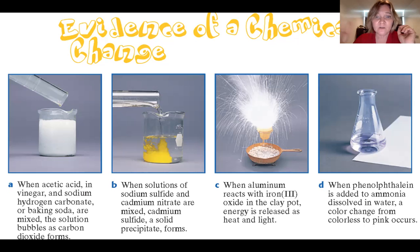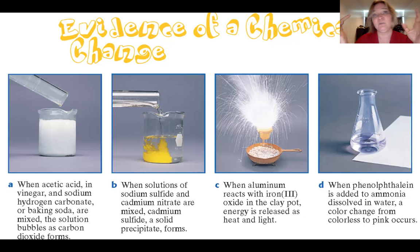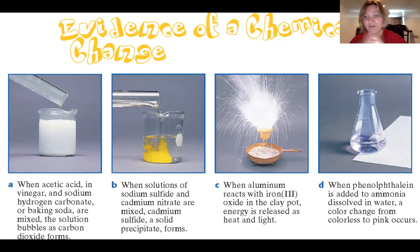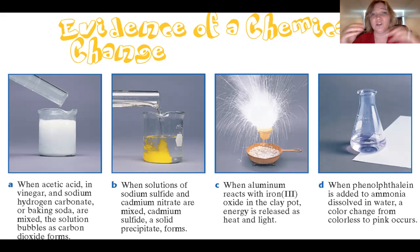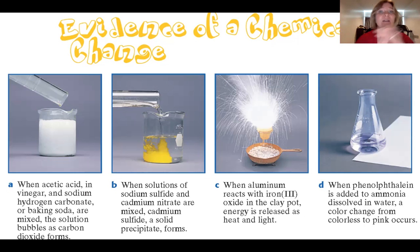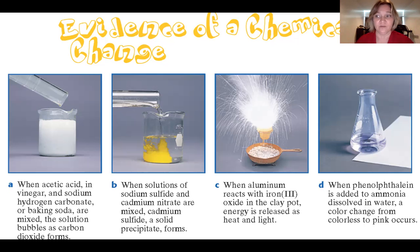In part C, when aluminum reacts with iron(III) oxide in a clay pot, energy is released as heat and light. If you see explosions, fire, or sparks, that's a really good indication of a chemical change. Finally, in part D, when phenolphthalein is added to ammonia dissolved in water, the color changes from colorless to pink. Color change is probably the least convincing argument for a chemical change — if you add green food dye to a glass of water and say 'color change,' that's not very convincing. So I wouldn't use color change alone as absolute proof.